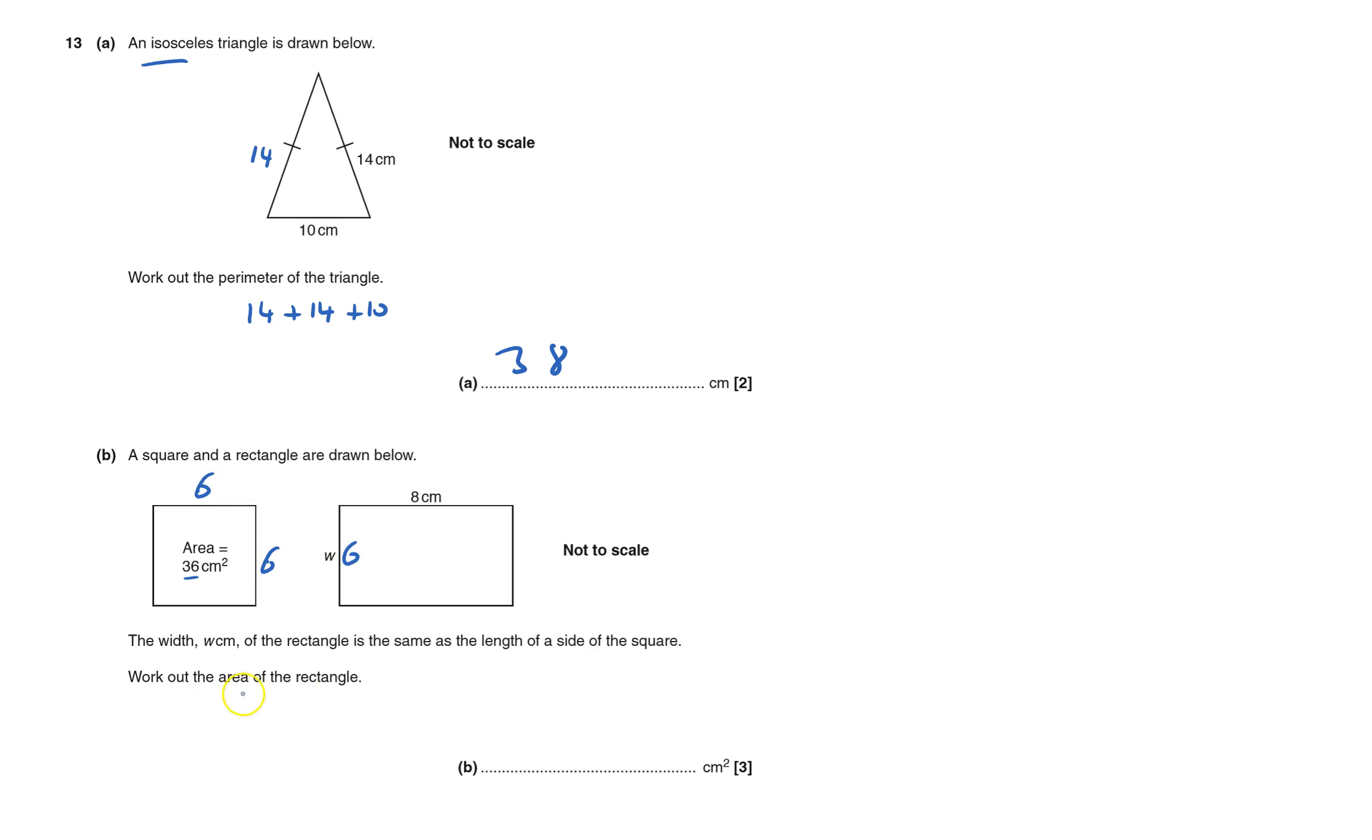So this side is 6 and then what I have to do, I have to work out the area of the rectangle. So the width times the length, that would be 6 times 8 and that's 48 centimeter squared. Always check it's got the units. And that's question 13 done.